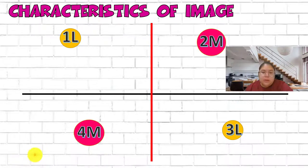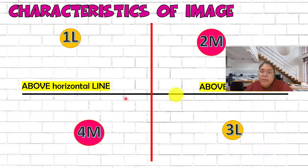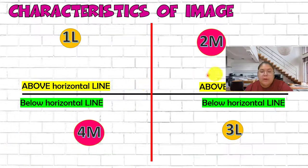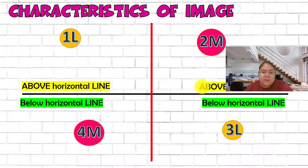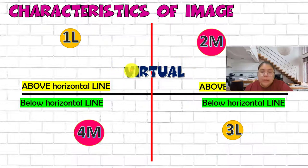The horizontal line separates above and below. Above the horizontal line means you get a virtual image - virtual means it cannot be captured on a screen, like when something blocks the mirror. Below the horizontal line means your image is a real image. This guides you later in determining the characteristic of the image you draw.